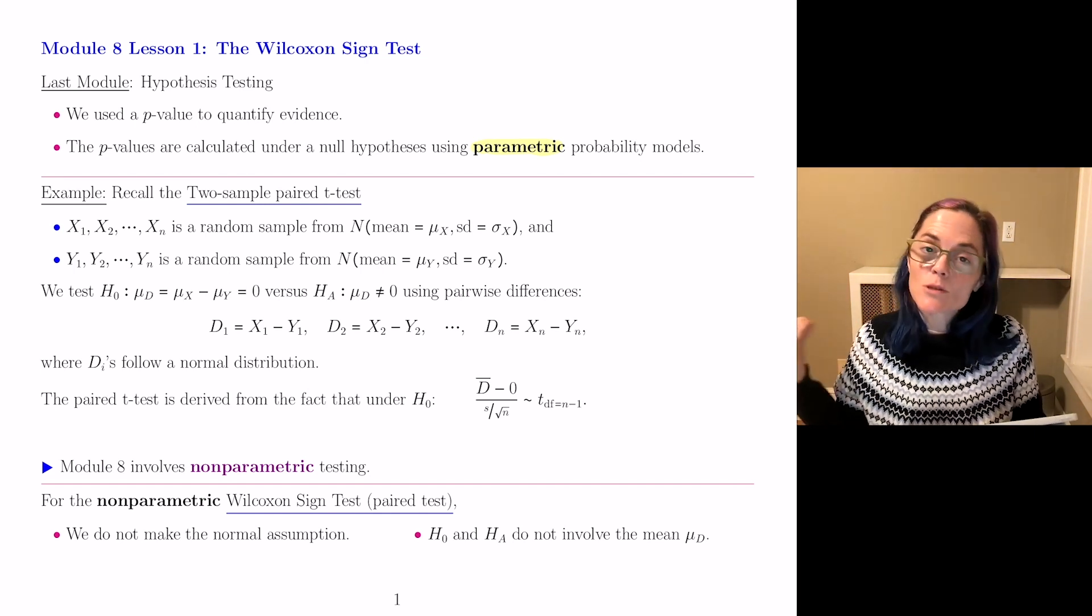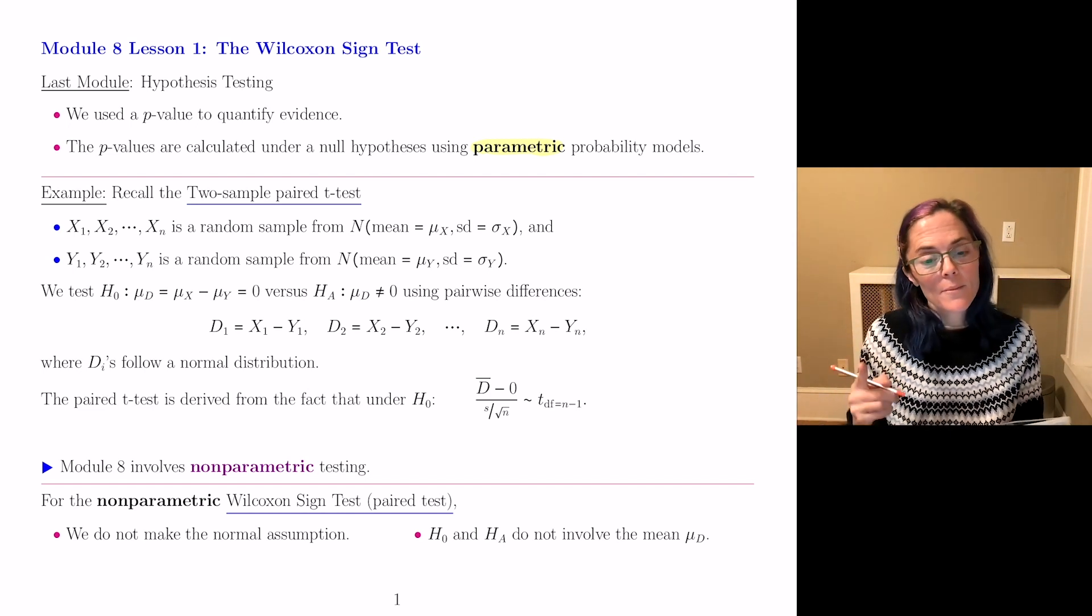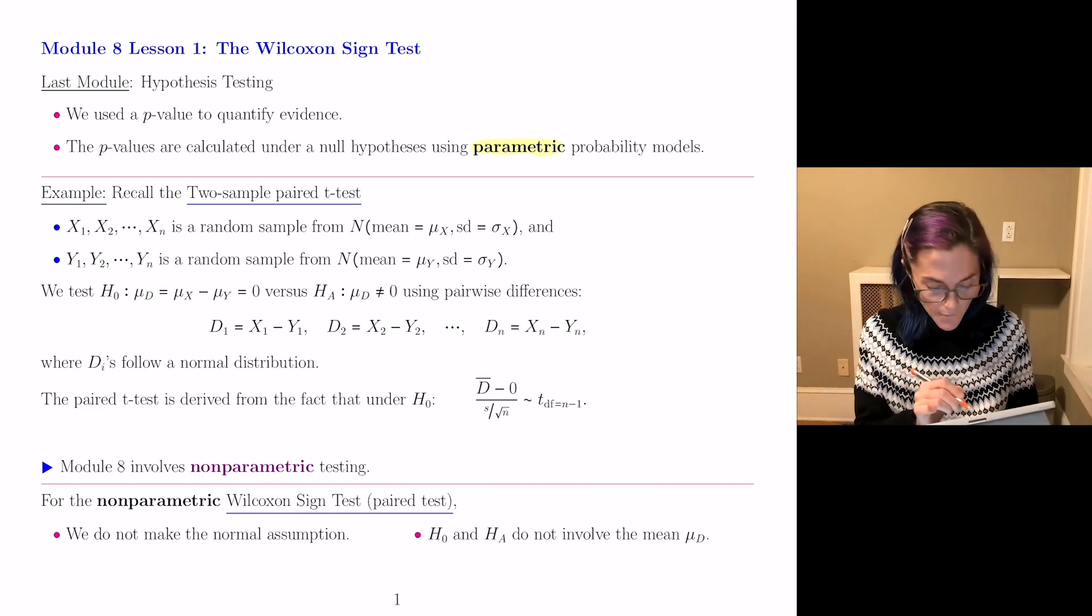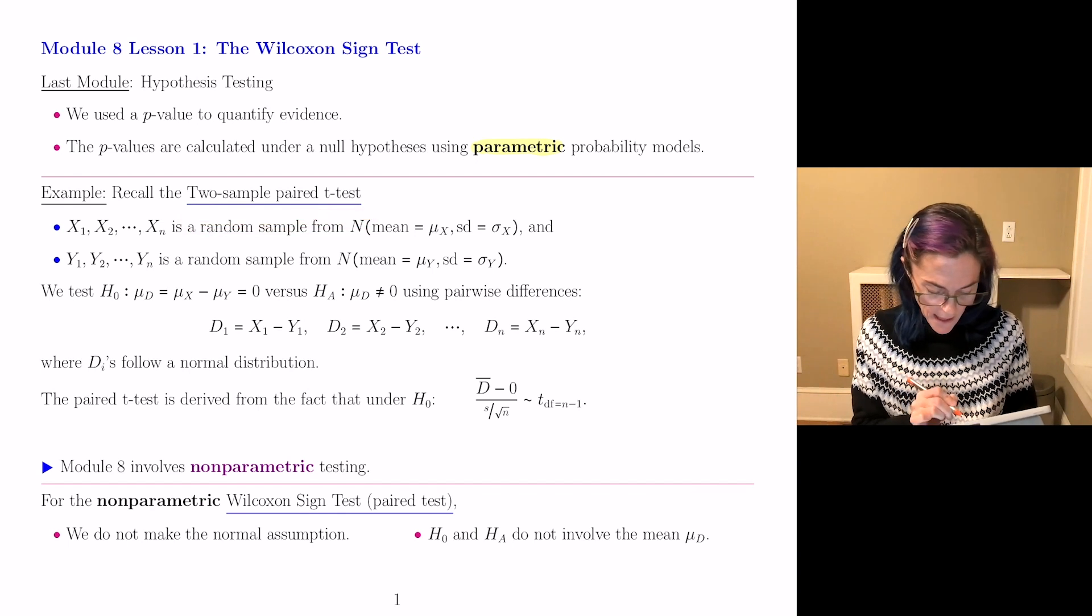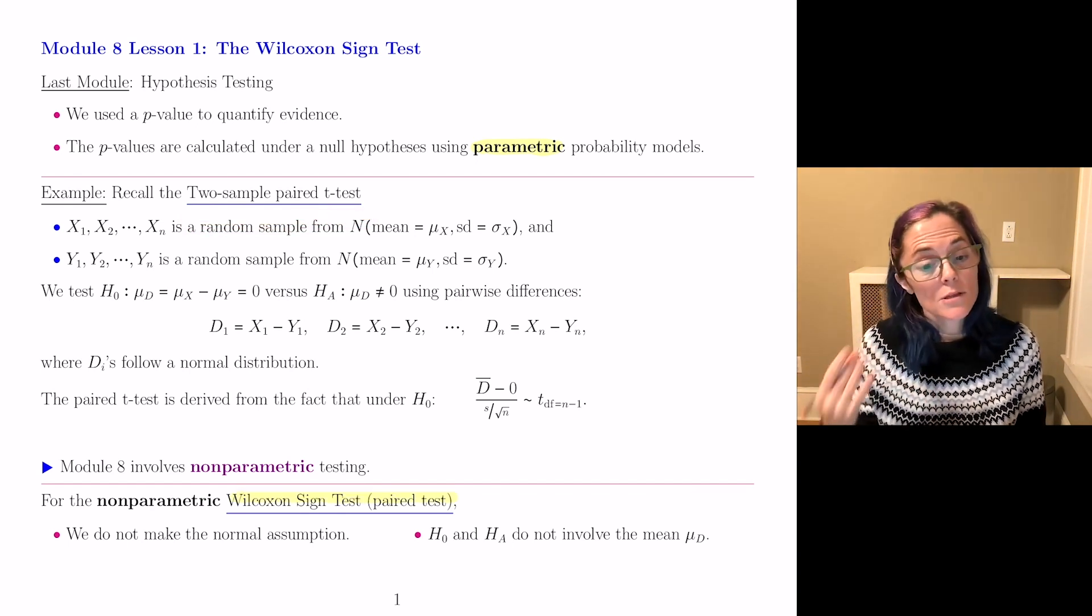Now, as I mentioned, this whole module is nonparametric testing. We have a nonparametric analog of the two-sample t-test, and it is called the Wilcoxon sign test. It is also paired.